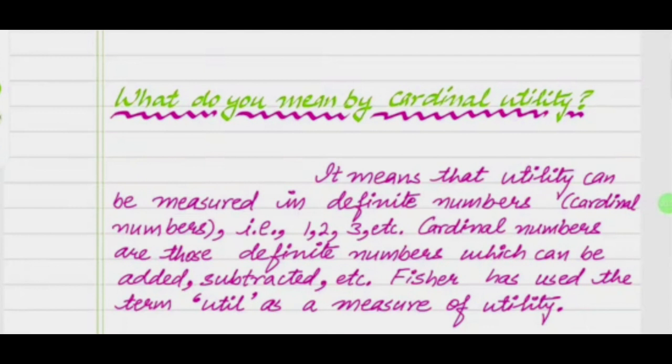Cardinal numbers such as 1, 2, 3, etc. Cardinal numbers are those definite numbers which can be added, subtracted, multiplied, divided, etc. Fisher has used the term Util as a measure of utility.